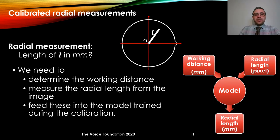During calibration, we created a model that takes working distance and radius of a circle in pixels and predicts the millimeter length of that radius. We can use that model for making measurements of any object that has one end at the center of the field. We find the working distance using the laser-based vertical measurement method, then measure the length L in pixels from the image, and feed these two inputs into the calibrated model, which then estimates the length L in millimeters.